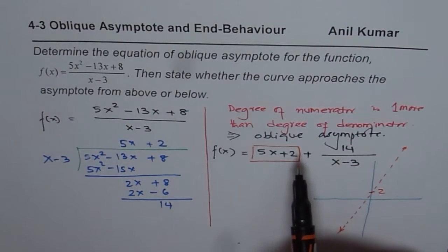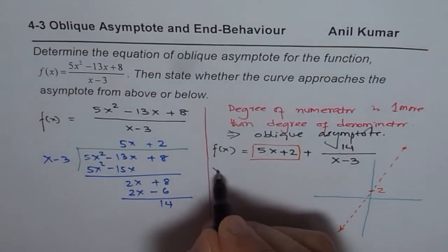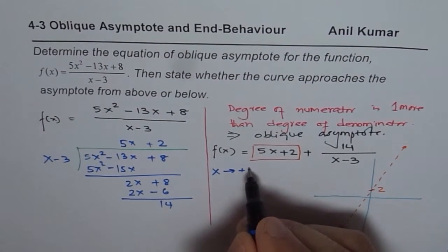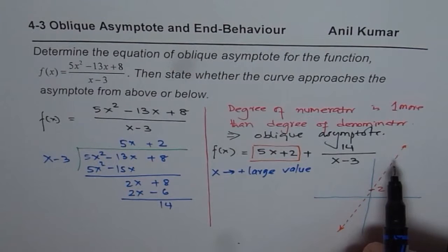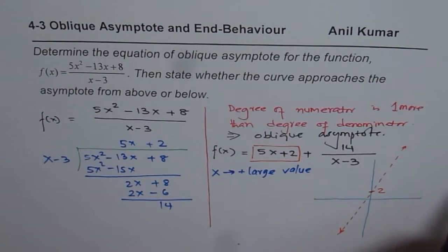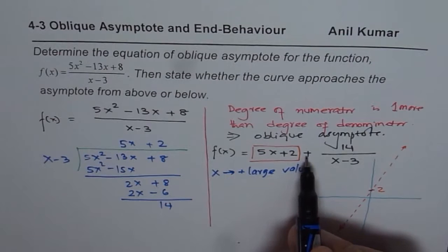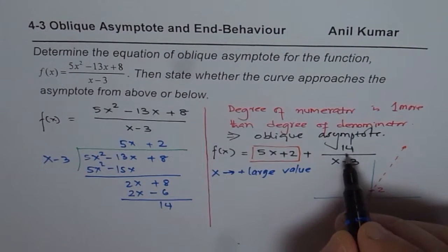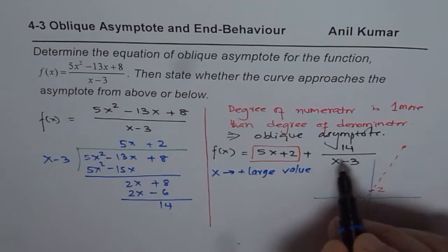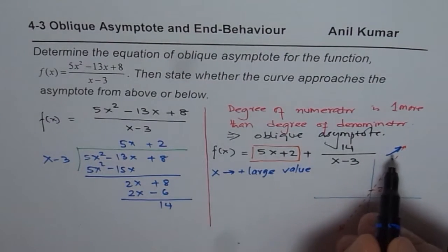Now let us examine the behavior of the function near the oblique asymptote. If x is approaching positive infinity, then we have 5x plus 2 plus 14 over something positive. That means this remainder term is positive, so the function is greater than the line itself — we are approaching from above.